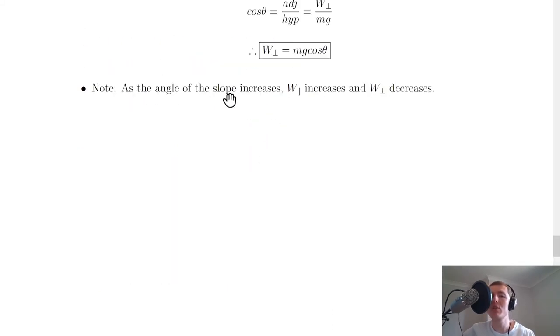As the angle of the slope increases, the parallel component of the weight increases and the perpendicular component decreases. The opposite is also true: if the angle decreases, the parallel component decreases while the perpendicular component increases.